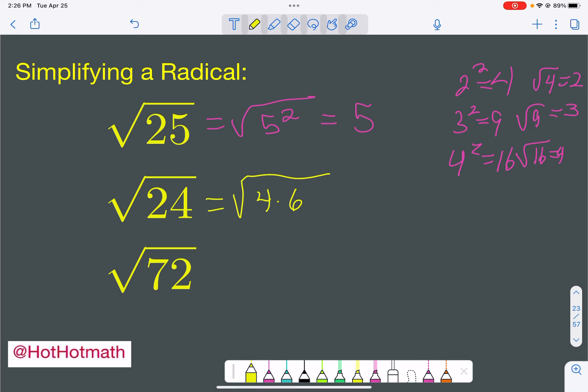6 doesn't contain anything that would be on that perfect square list, like 4, 9, 16, or 25. So all we can do is take out the 4. The square root of that is a 2. We're going to set that in front of the radical, and then leave the 6 behind.